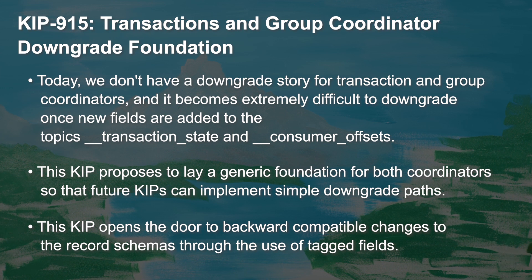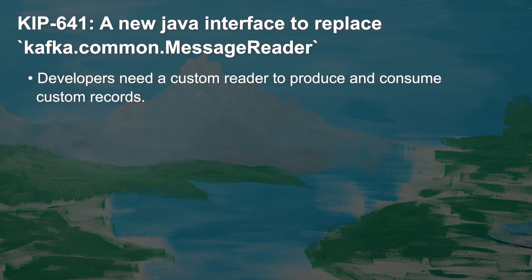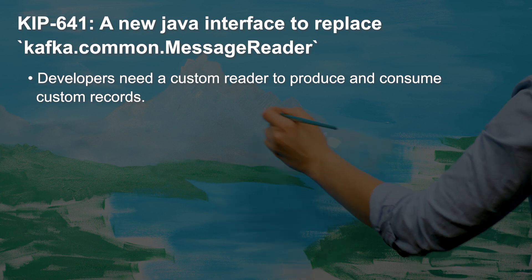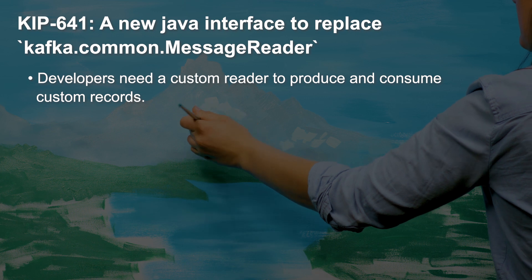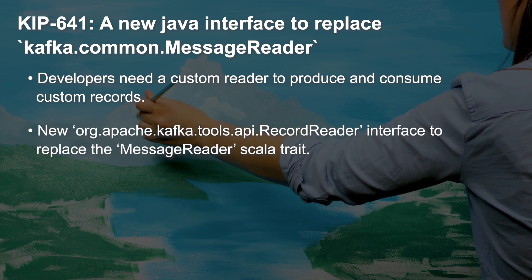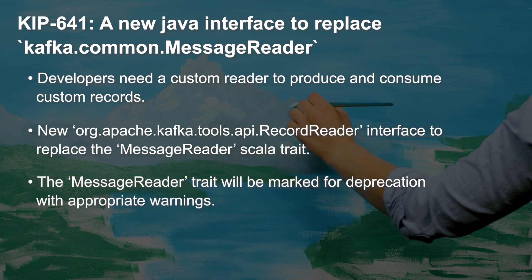Any future tag fields won't require a version bump, and older brokers can simply ignore the tag fields that they don't recognize. KIP 641 creates a new Java interface to replace Kafka's common message reader. Developers need a custom reader to produce and consume custom records, which means they need a Java public interface in the client's module to implement for their custom logic. KIP 641 introduces a new record reader interface to replace the message reader Scala trait. Note that the message reader trait will be marked for deprecation.